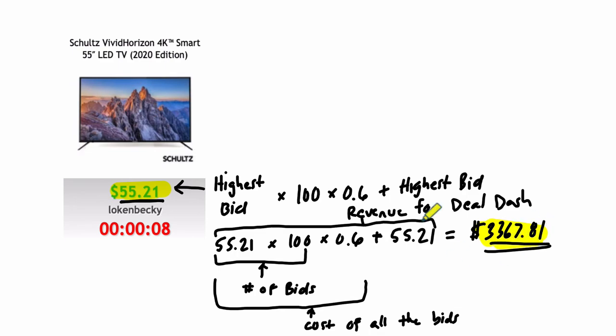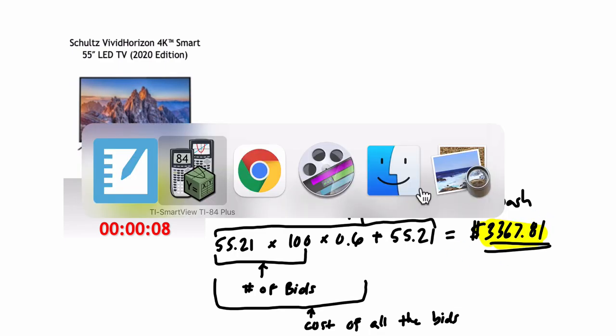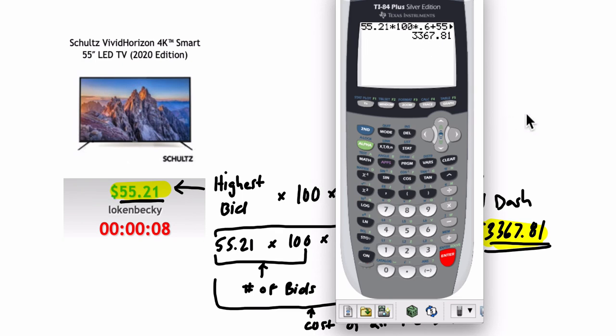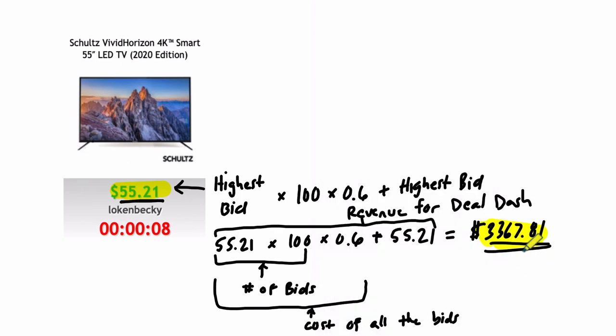I guess it's good for the person who wins, possibly. It depends how many times they had to bid on this thing. But we know that $3,367.81 is $167.81 above what it sells for on the website.